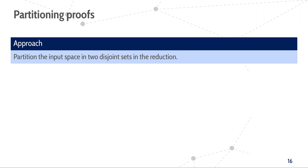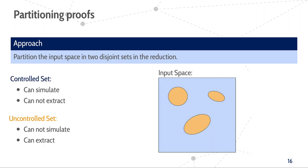Hence, there is no room for the reduction to lie to the adversary without being caught. In consequence, this limits us to doing a so-called partitioning proof in order to prove the pseudorandomness of a VRF. In such a proof, the reduction randomly partitions the input space of the VRF in two disjoint sets, a so-called controlled set and an uncontrolled set. For inputs in the controlled set, the reduction can simulate answers to the adversary's evaluation queries, but it cannot extract the solution to the underlying hardness assumption if the adversary chooses the challenge input in it. For the uncontrolled set, it is exactly the other way around.